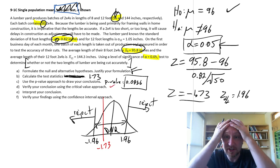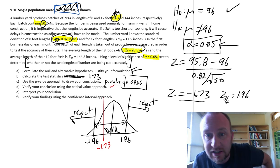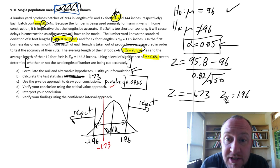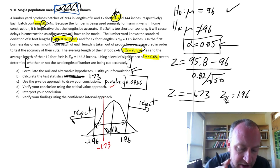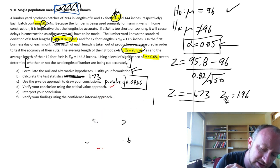Interpret our conclusion. So here I have insufficient evidence to reject the null hypothesis. I am unable to show that we are not achieving our objective of 96 inches. Part F. Verify your findings using the confidence interval approach. Okay. So that's a little bit different.